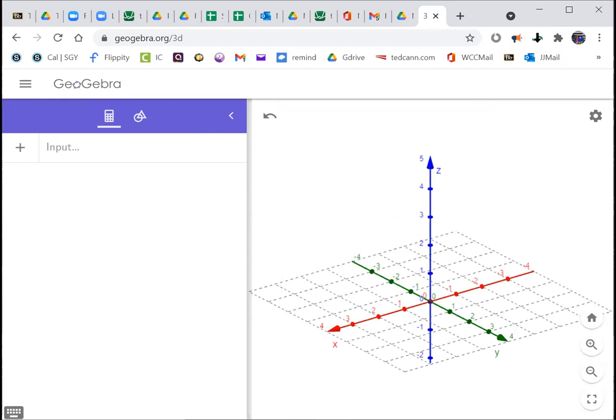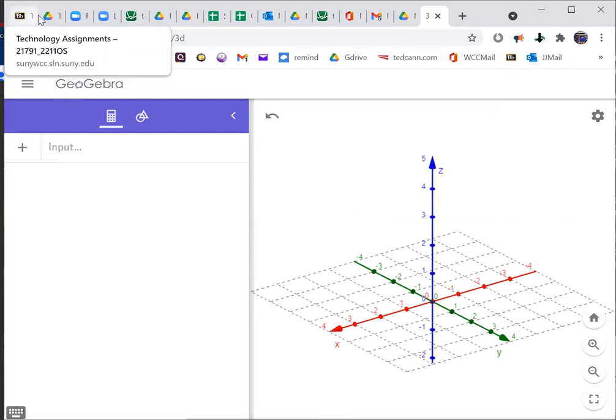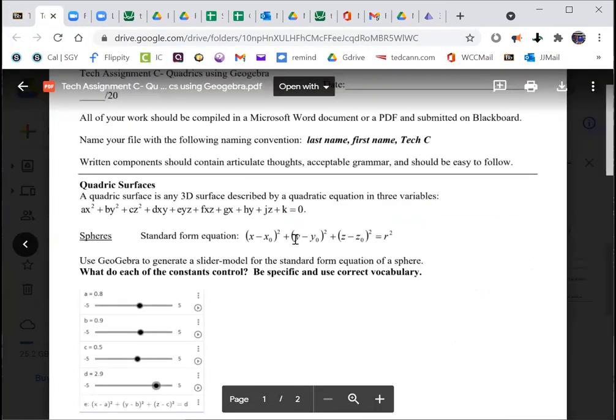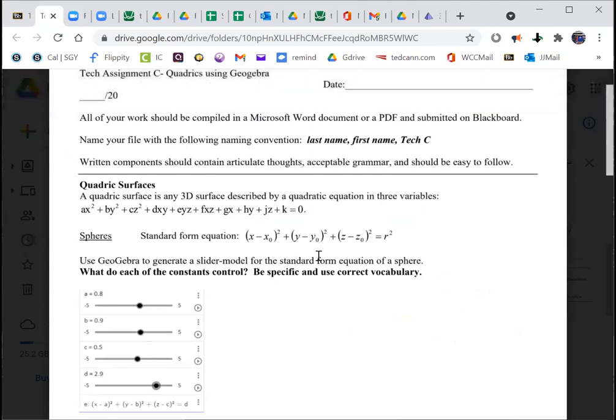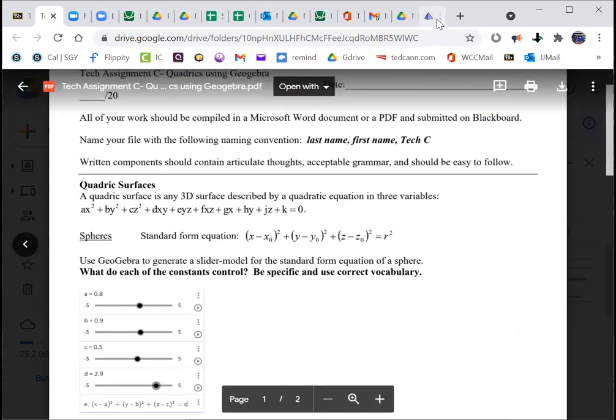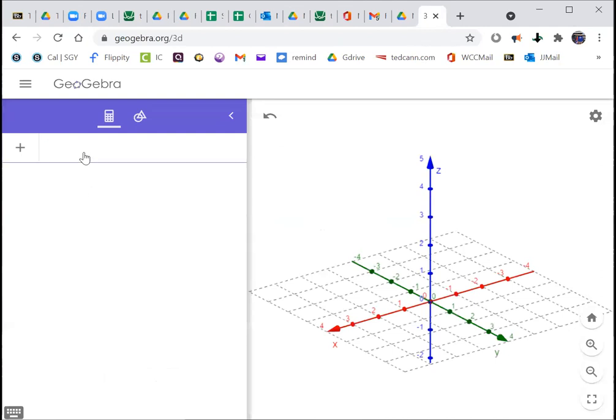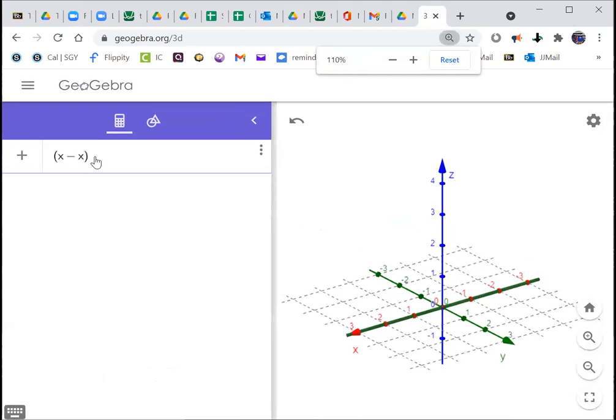So you go to settings, click on x axis, you can play around with tick marks too if you want, but x axis label x, y axis label y, z axis label z, just so you have it all there.